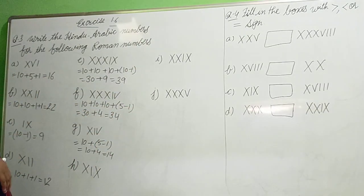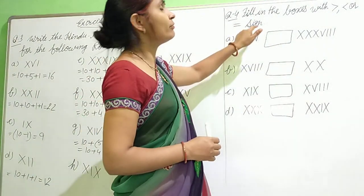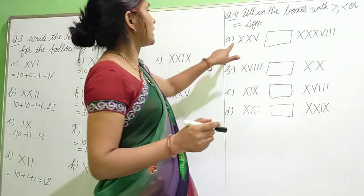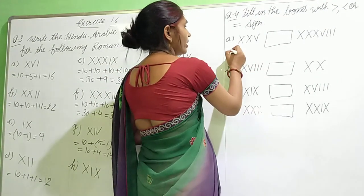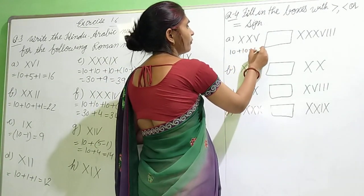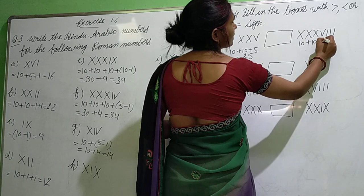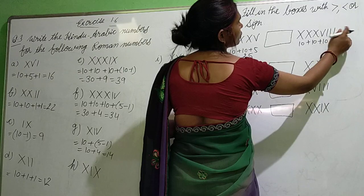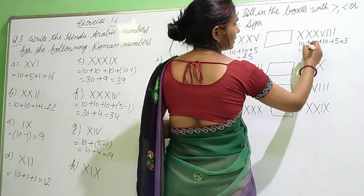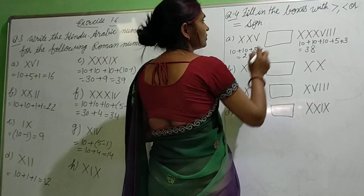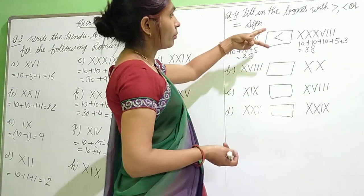H, I and J — 3 parts you have to do yourself. Next question, question 4: fill in the blanks with greater than, less than, or equal sign. Which number is greater? We have to put the sign. XXV is 10 plus 10 plus 5, which gives 25. XXXVIII is 10 plus 10 plus 10 plus 5 plus 1 plus 1 plus 1, giving 38. So 38 is bigger than 25 — mouth of the sign opens toward the bigger number.